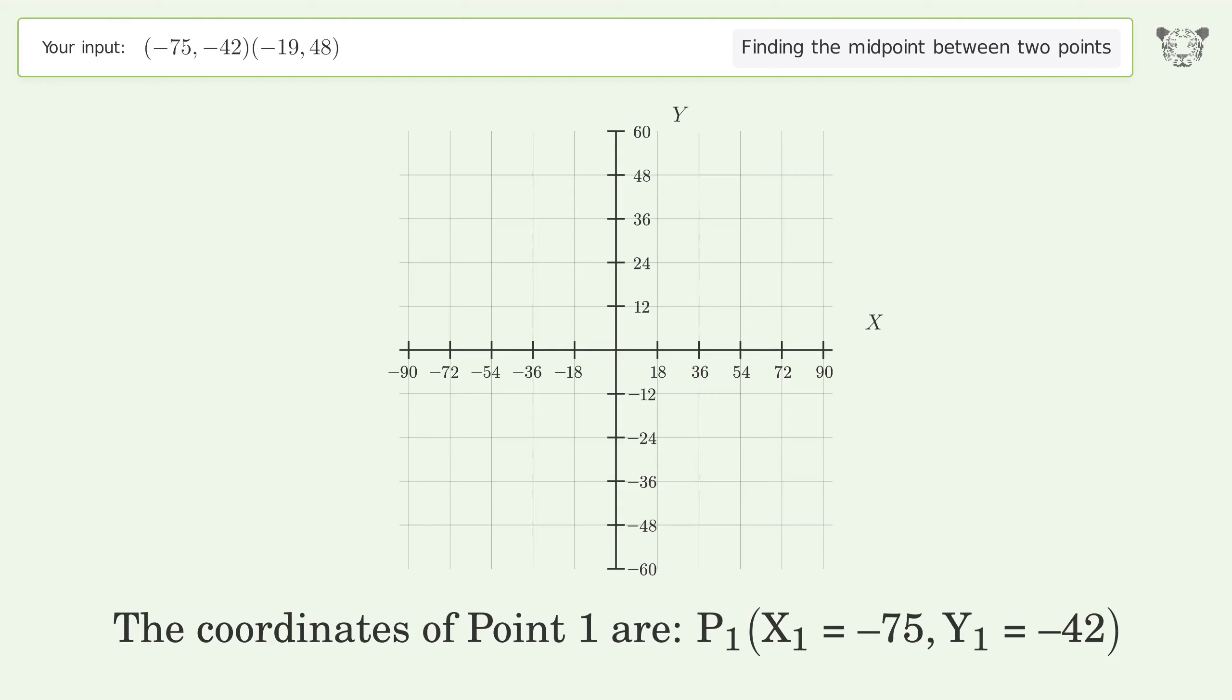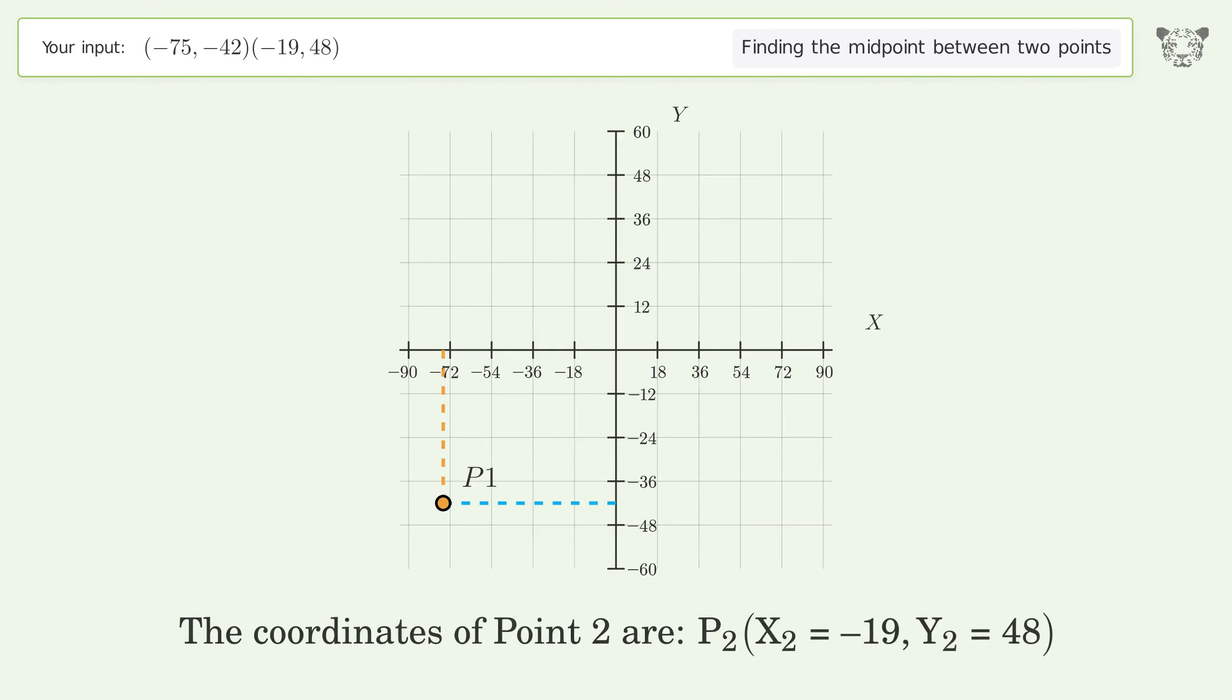Plot the two points and calculate the midpoint using the formula. The coordinates of Point 1 are: x₁ = -75, y₁ = -42.